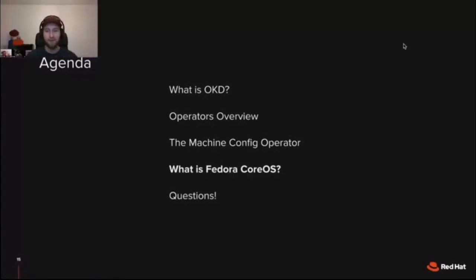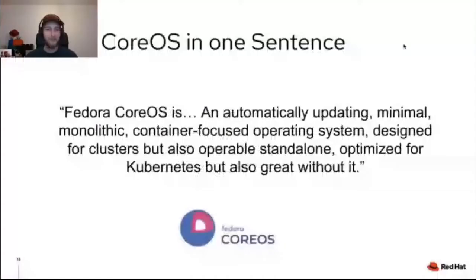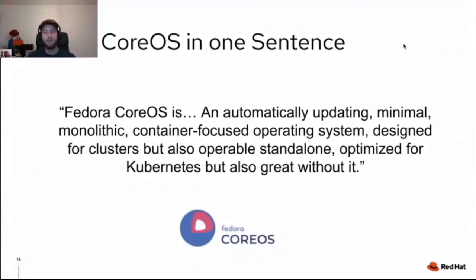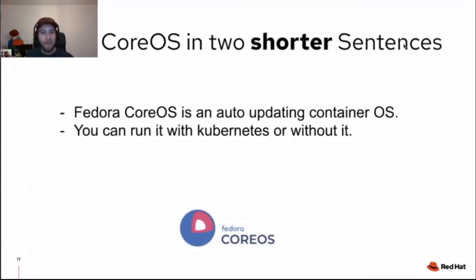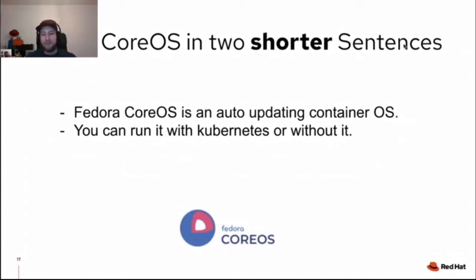Now we'll dive deeper into Fedora CoreOS. In one sentence: Fedora CoreOS is an automatically updating, minimal, monolithic, container-focused operating system, designed for clusters but also operable standalone, optimized for Kubernetes but also great without it. Or in two shorter sentences: Fedora CoreOS is an auto-updating container OS and you can run it with Kubernetes or without it.